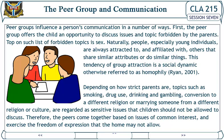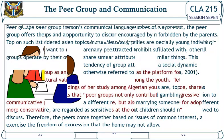Rian (2001). Depending on how strict parents are, topics such as smoking, drug use, drinking, and gambling, conversion to a different religion, or marrying someone from a different religion or culture are regarded as sensitive issues that children should not be allowed to discuss. Therefore, peers come together based on issues of common interest and exercise the freedom of expression that the home may not allow.